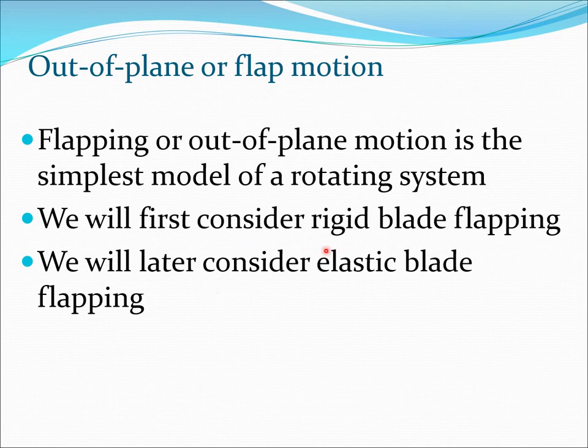The simplest model is rigid blade flapping, and essentially rigid blade means that we are not considering the possibility of blade bending. That would require us to use beam theory, which we are going to discuss in a later lecture. So as of today we are only going to consider rigid blade flap, which is the simplest model you can get for a rotor blade.